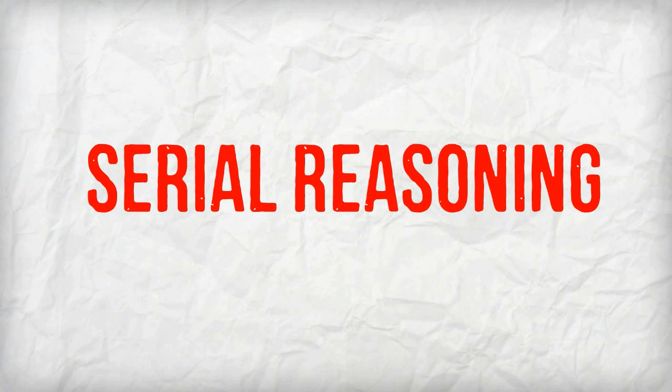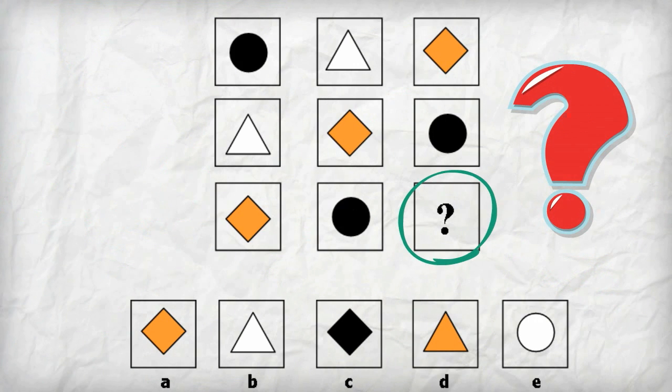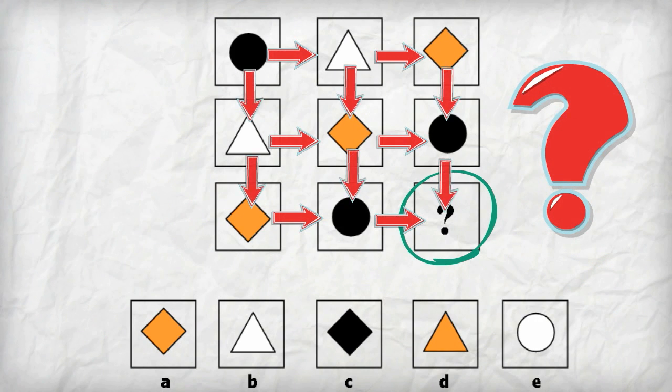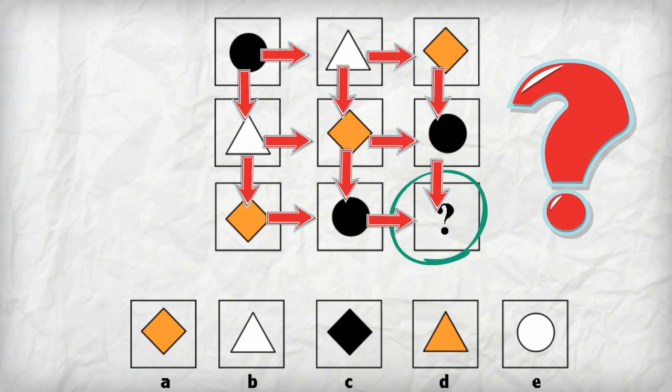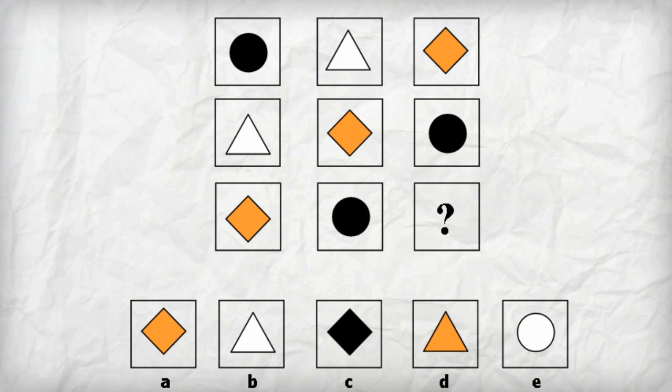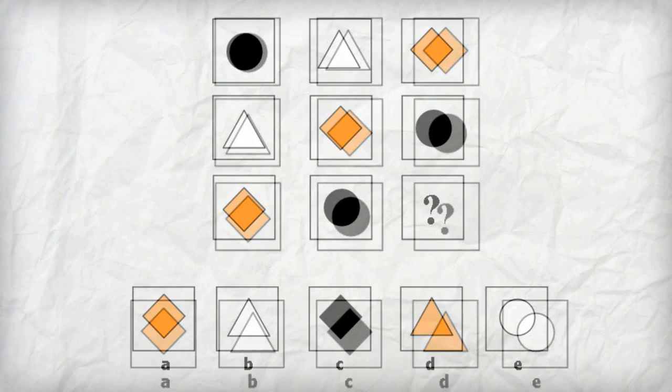In a serial reasoning exercise, the child must recognize how the shapes in the matrix change across the rows and down the columns. As the shapes change from row to row and column to column, each shape appears only once in each row and column.